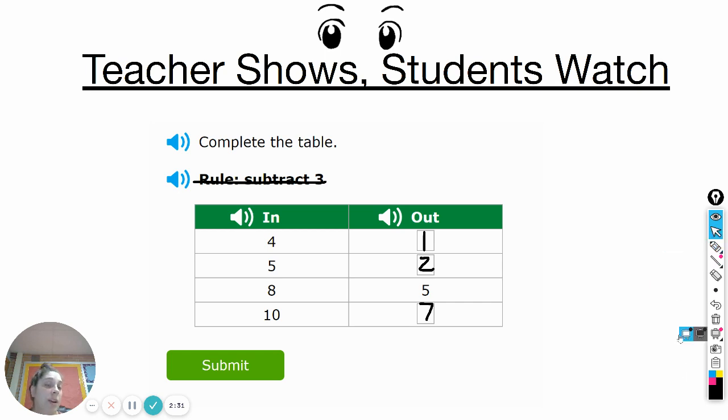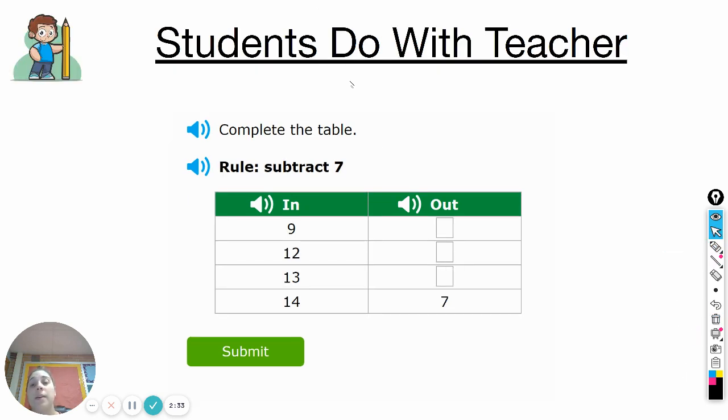All right, let's go ahead and do one together. The rule for this input output table is subtract seven. So you can see they had 14, they took away seven and they ended with seven. I'll give you just a moment to get this input output table ready and then we're going to fill in the three missing numbers over here. Go ahead and pause the video, get your table ready and then press play.